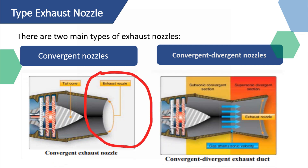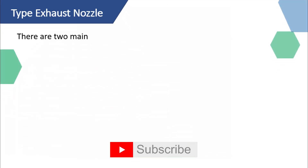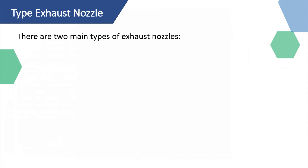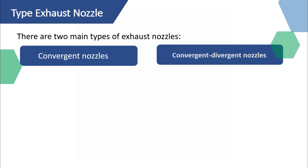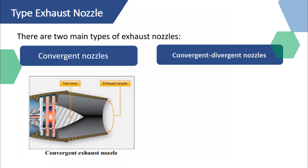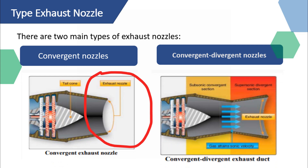During the expansion of gas in a turbine, the energy contained in the gas is extracted and converted into mechanical energy, primarily in the form of shaft power. The amount of energy absorbed by the turbine is precisely what's needed to drive the compressor and other accessories such as the fuel pump, oil pump, and electric generator. In engines used for jet propulsion, a substantial portion of gas energy remains available to be converted into engine thrust. This is where the exhaust nozzle comes into play, converting the gas potential energy into kinetic energy — for example, gas velocity — which is crucial for generating thrust.